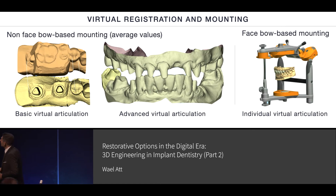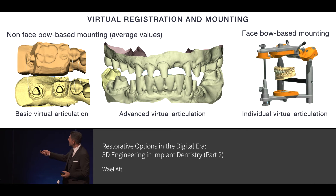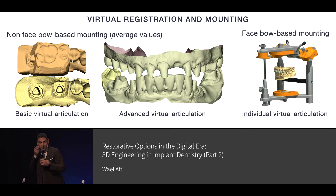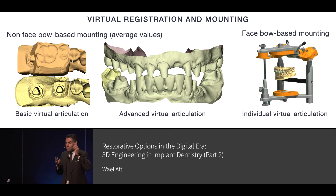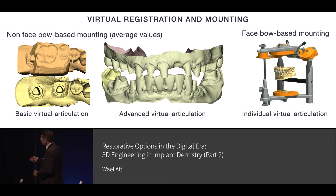If we think about so-called virtual registration, or virtual mounting, we have three types. The first one is called basic virtual articulation, which is available in all intraoral scanners. You scan the lower, you scan the upper, you ask the patient to bite, and then the algorithm will put the two surfaces or the two scans together, creating the occluding surfaces. This is called basic virtual articulation.